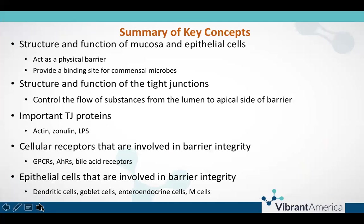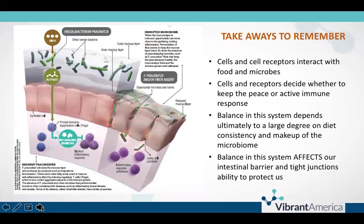Last, we discussed several types of epithelial cells connected to the health integrity of the epithelial barrier, including dendritic cells that sense the microbial environment, goblet cells that generate mucus, enteroendocrine cells with their G-protein coupled receptors influencing immune tolerance, and M cells that endocytose and phagocytose antigens to present them to T cells. The takeaway from this module is that cells and cell receptors lining the epithelial layer are constantly interacting with our food and microbes, and based on those interactions, these cells and receptors either keep the peace or activate our immune responses. Whether this system is balanced ultimately depends on what we eat and our microbiome makeup, which affects whether our intestinal barrier and tight junctions are able to remain stable and fortified.